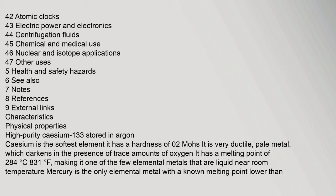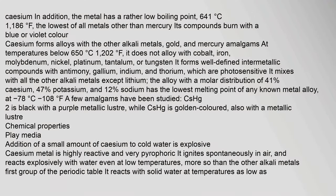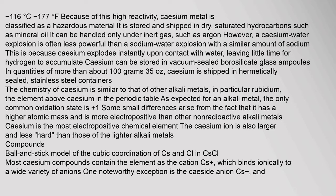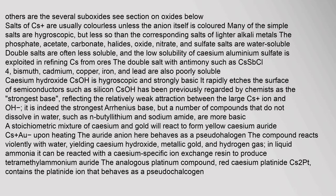Caesium is the softest element; it has a hardness of 0.2 Mohs. It is a very ductile, pale metal which darkens in the presence of trace amounts of oxygen. It has a melting point of 28.4°C and a rather low boiling point of 641°C.